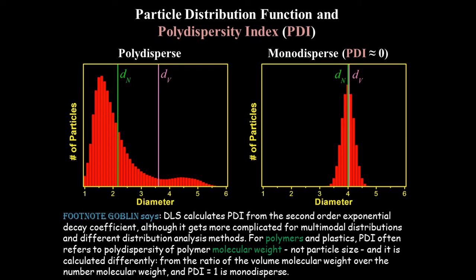If all of the particles are exactly the same size, the sample is called monodispersed, and the number and volume averages are equal. If the particle size distribution is spread out, the sample is called polydispersed. Polydispersity is often quantified in the polydispersity index, or PDI. A perfectly monodispersed collection of particles has a PDI of zero.